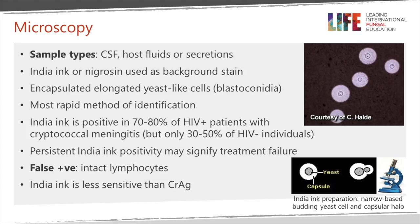Microscopy can be done principally on spinal fluid, but sometimes on other secretions or aspirations from an abscess next to a bone. India ink or nigrosin can be used as the background stain, and encapsulated yeast cells called blastoconidia are the most rapid method of identification. India ink is positive in 70 to 80 percent of patients with cryptococcal meningitis, but only 30 to 50 percent of HIV-negative individuals with cryptococcal meningitis.